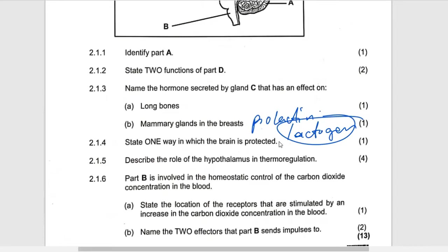They are saying state one way in which the brain is protected. It's protected in three ways: by the three layers which we call the meninges, the cerebrospinal fluid, and also by the cranium. Note it is the cranium, not the whole skull, because the skull includes also the jaws. So you should use the word cranium.